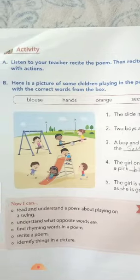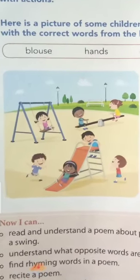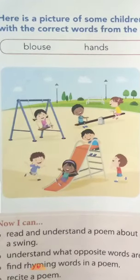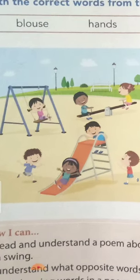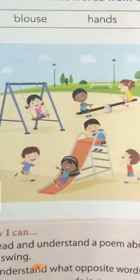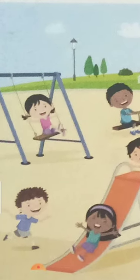Look at the picture. What is in this picture? You can see the slide color is orange and two boys. One boy is here and one boy is standing near the slide. One girl is on the swing. Swing means jula, and she is wearing a pink color blouse. Uska blouse ka color pink hai.